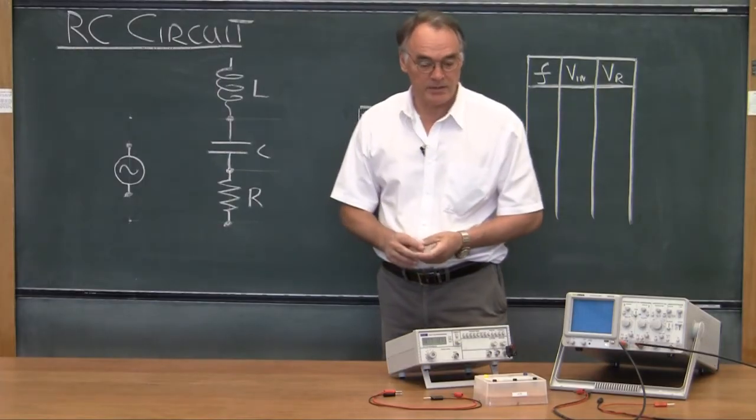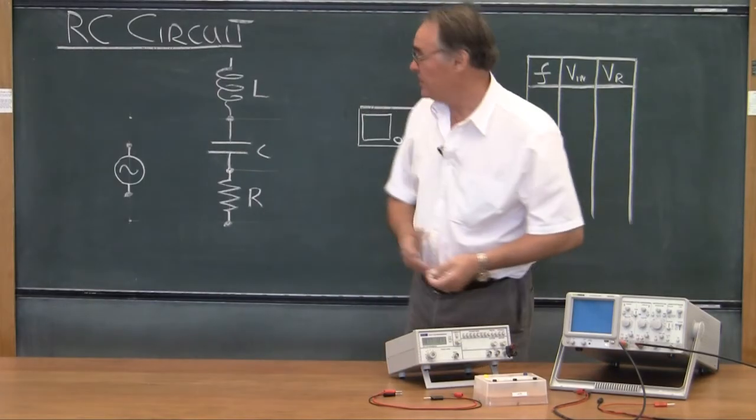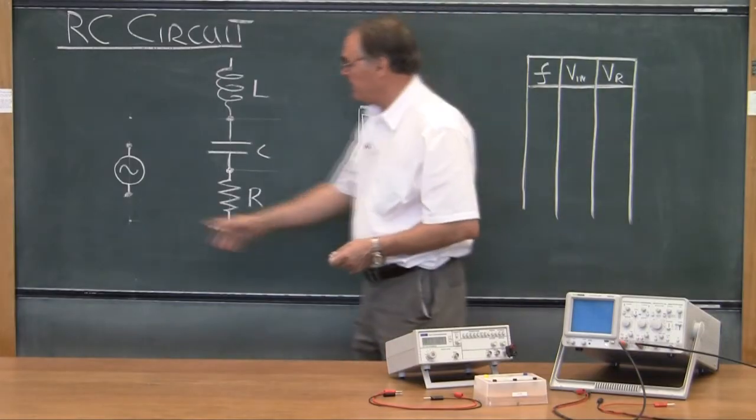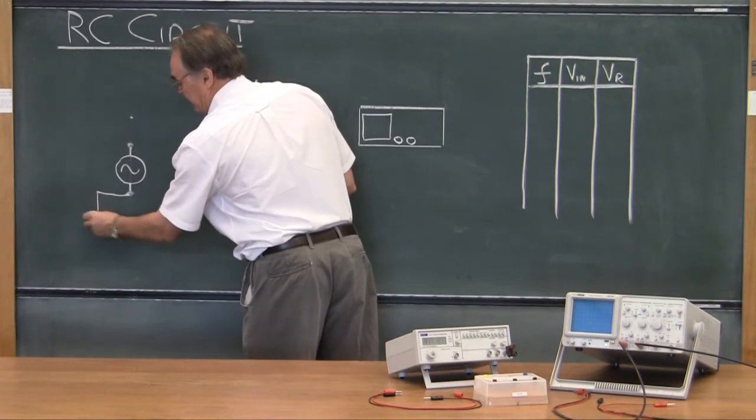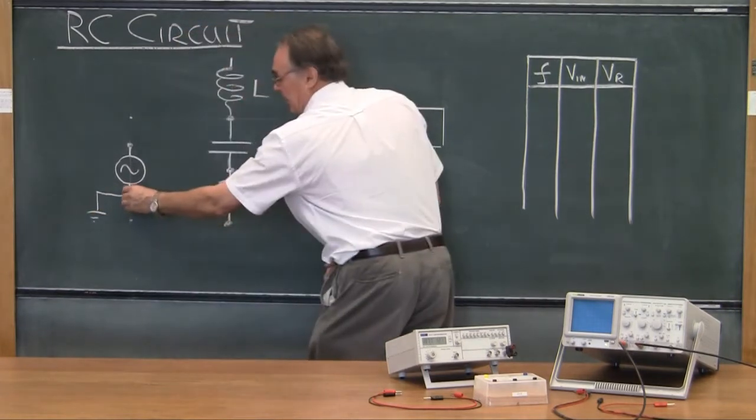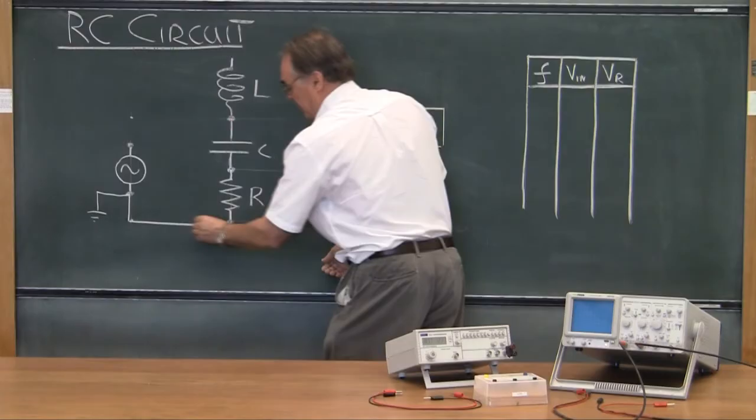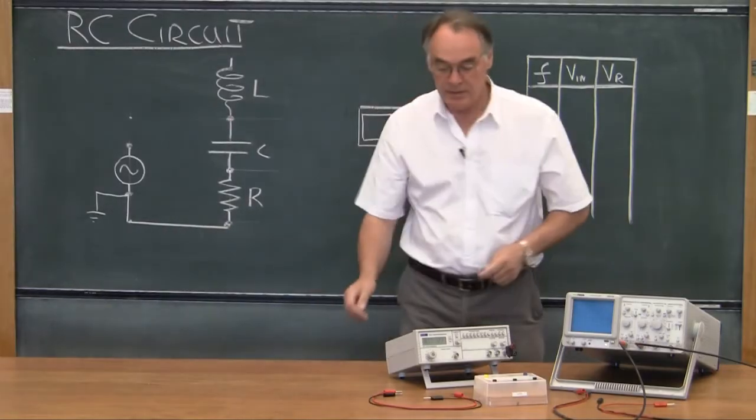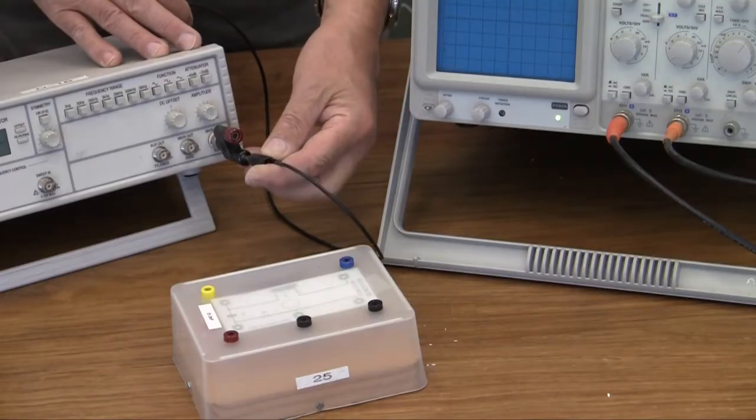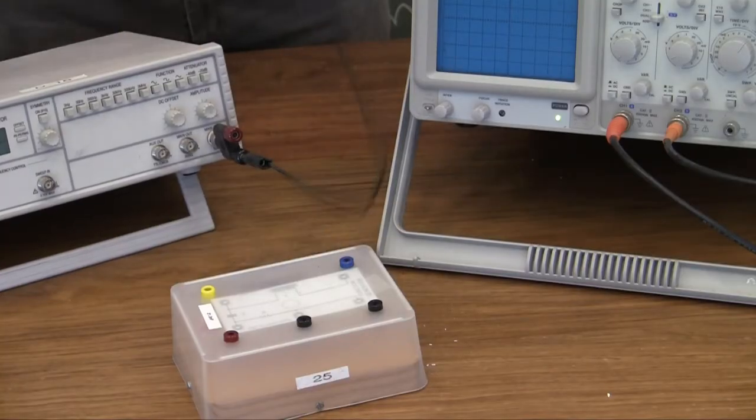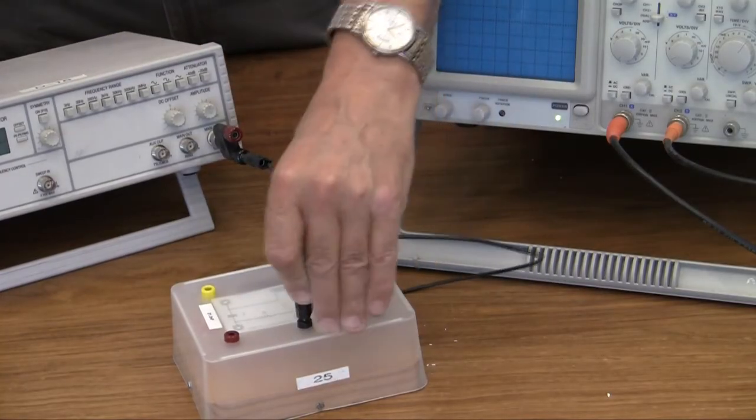Let's have a look to see how the circuit works. The first thing to do is to connect the earth side, which is the black connection, to the resistor. So I'm going to go from the earth side of the signal generator to that part of the resistor.